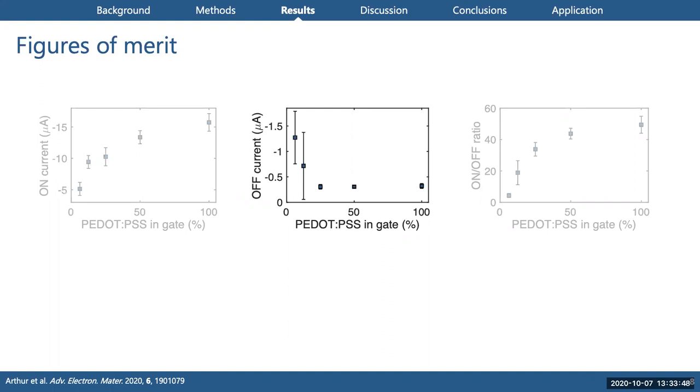At the same time, we also see a reduction in the gradient of the transfer curve, or the transconductance, as well as this distortion in the saturation regime which we link to the gate leakage current. To more quantitatively compare these devices, we've extracted the key figures of merit and we're plotting them against the PEDOT:PSS ratio. On this slide we have on and off currents and the on-off ratio. The on current increases just as we saw in the previous slide.